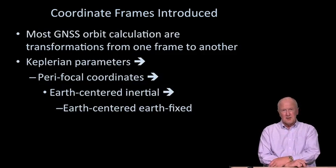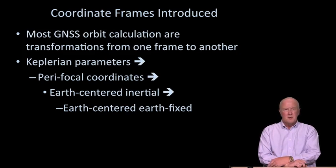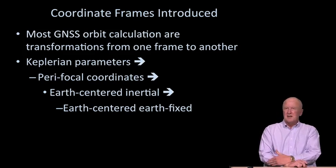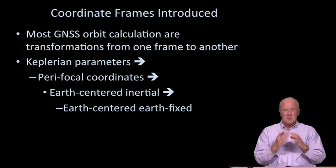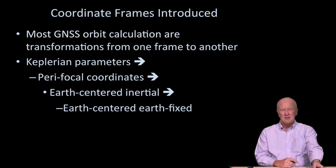Here are the coordinate frame transformations. As mentioned, the GNSS orbit calculations are transformations from one frame to another. We get Keplerian parameters, use those to define the satellite location in the perafocal coordinate system, then transform them into Earth-centered inertial, and then finally into Earth-centered Earth-fixed. That's the heavy lifting associated with opening and interpreting what comes in the GPS navigation message.